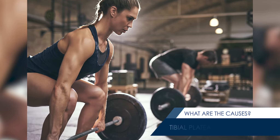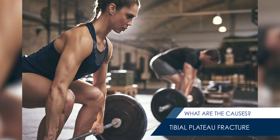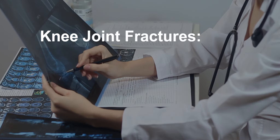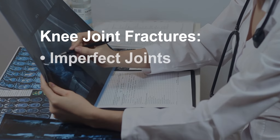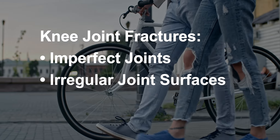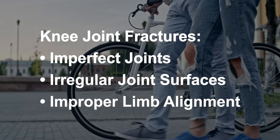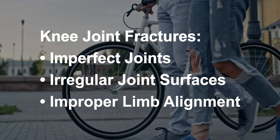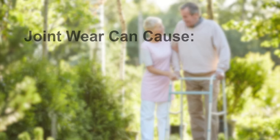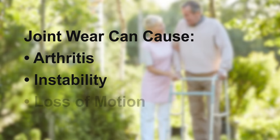Fractures that involve the upper fourth of the lower leg or tibia may or may not involve the knee joint. Fractures that enter the knee joint may render the joint imperfect and the joint surface irregular. Additionally, these fractures may result in improper limb alignment. Either of these factors may contribute to excessive joint wear, which can cause arthritis, instability, and loss of motion.